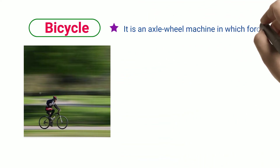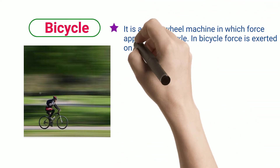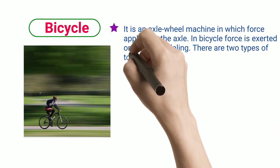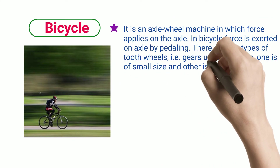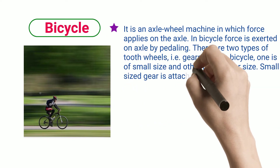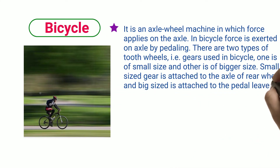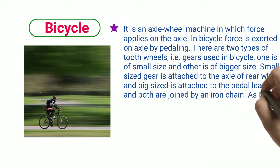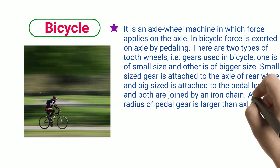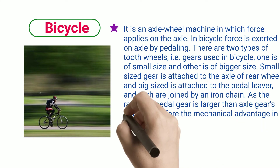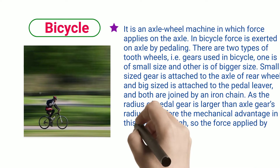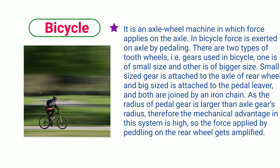Bicycle. It is a Wheel and Axle Machine in which force is applied on the Axle. In a Bicycle, force is exerted on the Axle by pedaling. There are two types of tooth wheels, i.e., gears used in a Bicycle — one of small size and one of bigger size. The small-sized gear is attached to the Axle of the Rear Wheel and the big-sized gear is attached to the Pedal Lever, and both are joined by an Iron Chain. As the radius of the Pedal Gear is larger than the Axle Gear, the mechanical advantage in this system is high, so the force applied by pedaling on the rear wheel gets amplified.